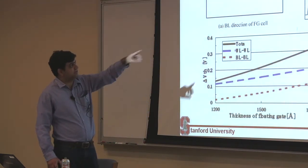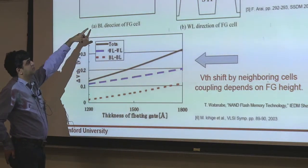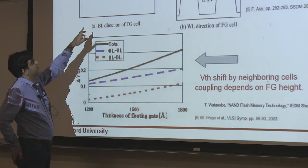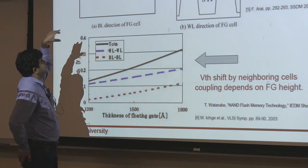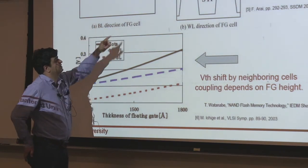One way to avoid it is wrapping the word line around the cells. If you look in the word line direction, it wraps around the cell. One thing it does is it increases your gate coupling ratio. But another good thing is it decreases the coupling between your two adjacent floating gates. Since that line is wrapping around, you don't get as much coupling — as compared to the other direction along the word line where you have a tall floating gate, so you get a lot of coupling between the two adjacent cells.